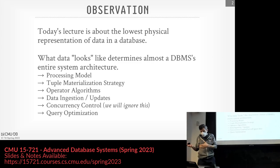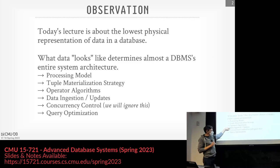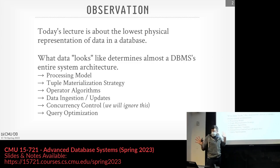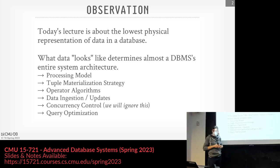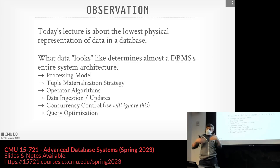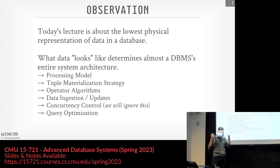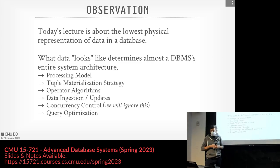Whether it's a row store or a column store determines so many different aspects of the system: how we process tuples, how we move data from one relational operator to the next, how we materialize intermediate results, what algorithms we use, whether we support ingestion updates, concurrency control, and query optimization. The query optimizer has to know what the storage system is doing to determine the best query plan.